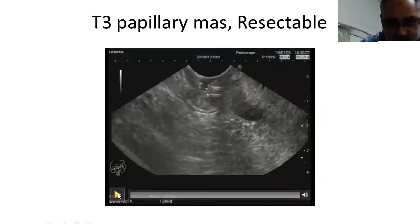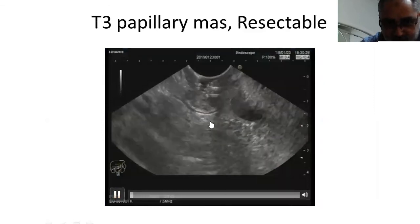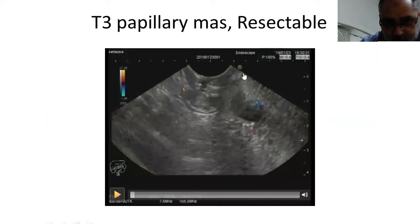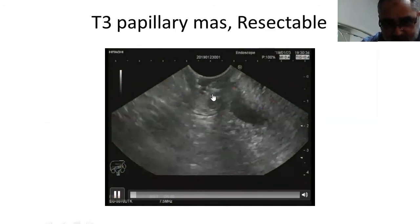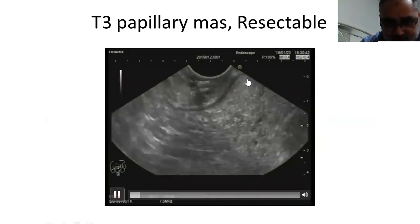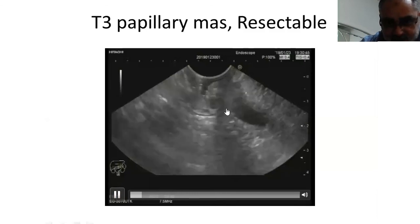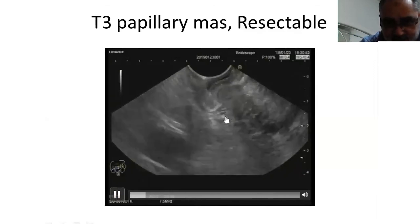This last example shows a T3 papillary mass. This is a papillary mass with a stent inside the lumen of the second part of the duodenum, and here there is interruption of the muscularis propria layer. This is the muscularis propria layer of the opposite wall — well preserved — but at the site of this mass, there is obvious interruption of the muscularis propria layer, and the mass extends into the head of the pancreas. So this is the papillary mass, stent inside the common bile duct, dilated pancreatic duct, interrupted muscularis propria — it is a T3 papillary mass.